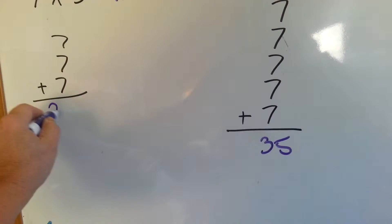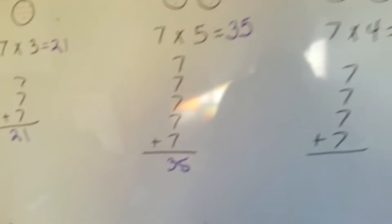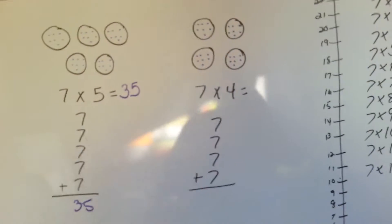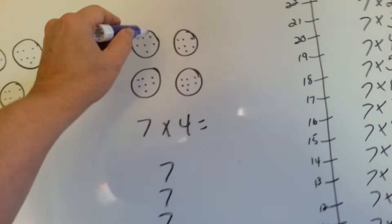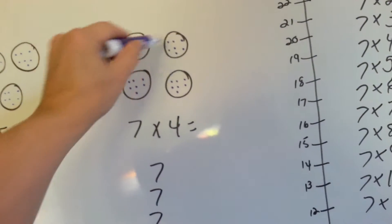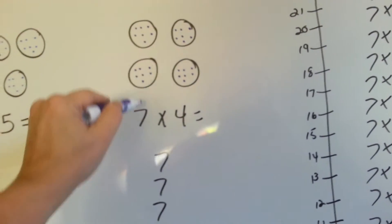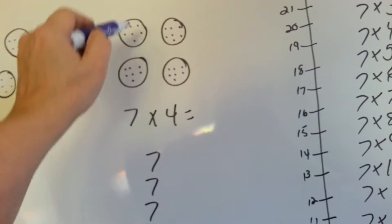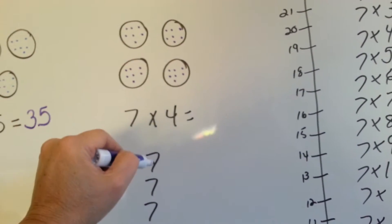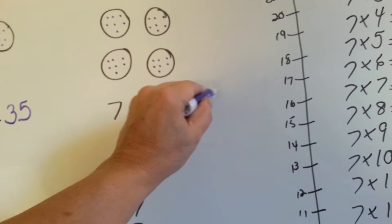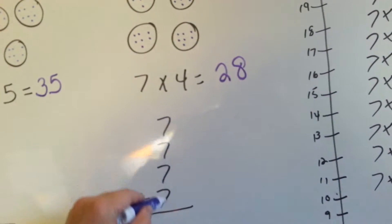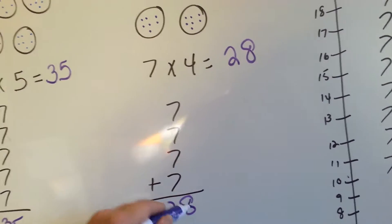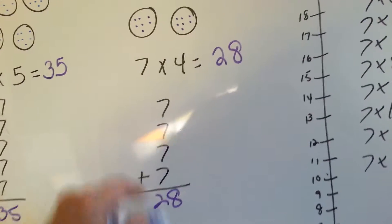Let's put a 21 underneath this one so that we can see we did that one. So 7 times 5 is 35. What about 7 times 4? Each circle has 7. There's 4 of them so we have 7 four times: 1 times, 2 times, 3 times, 4 times. 7 times 4 is 28, which is exactly what 7 plus 7 plus 7 plus 7 is. That's the same thing as 7 times 4.